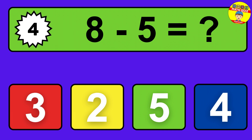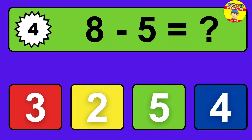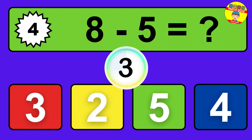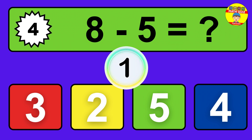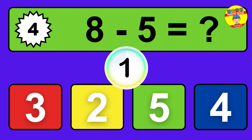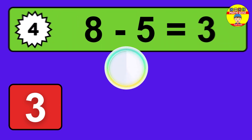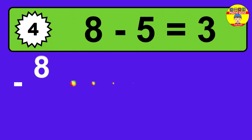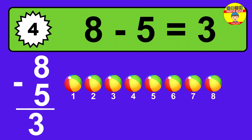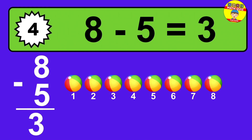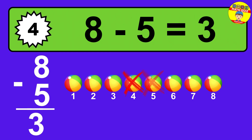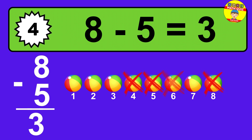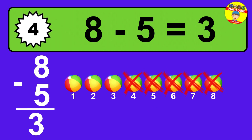Question four: eight minus five equals what? The answer is eight minus five is three. Let's count it. One, two, three.